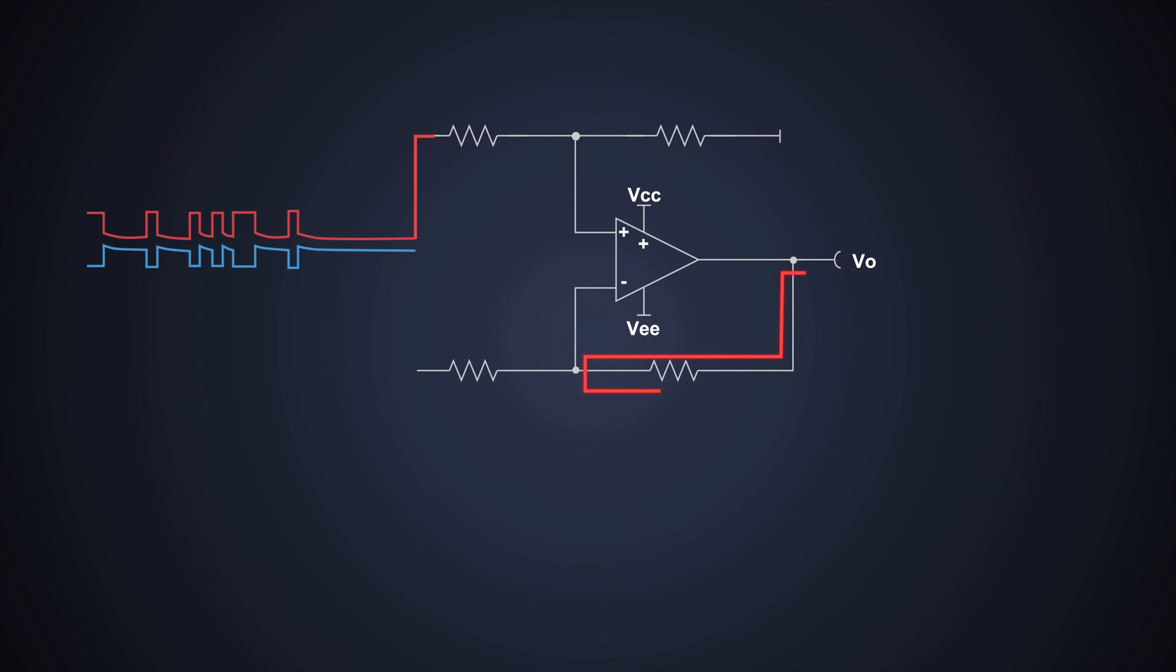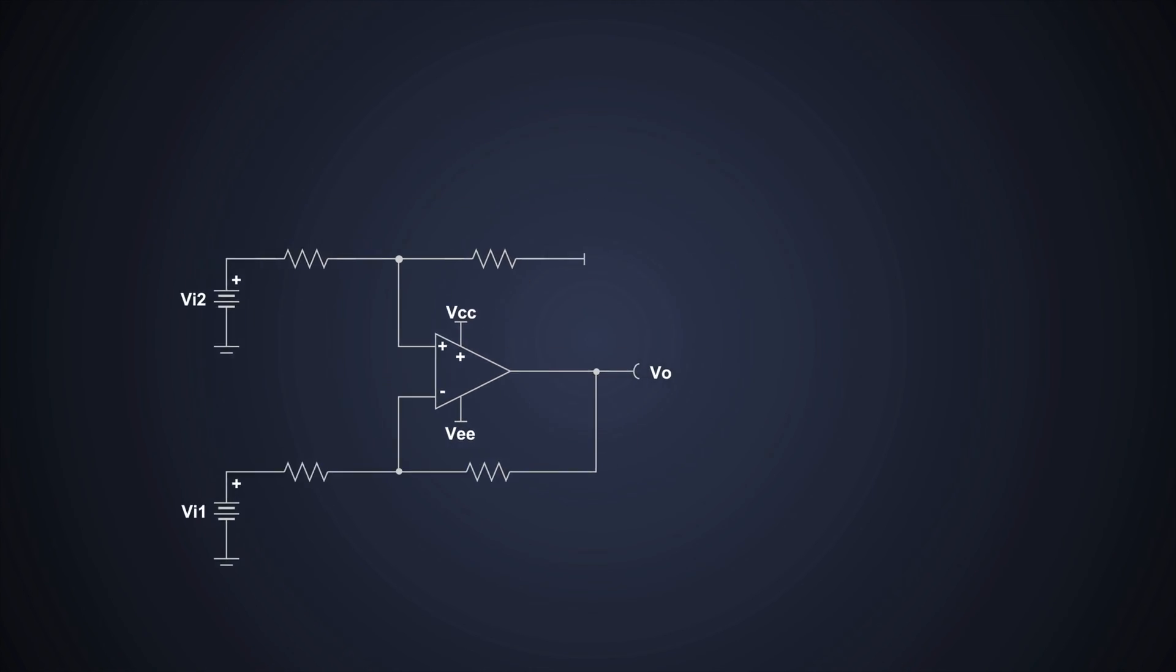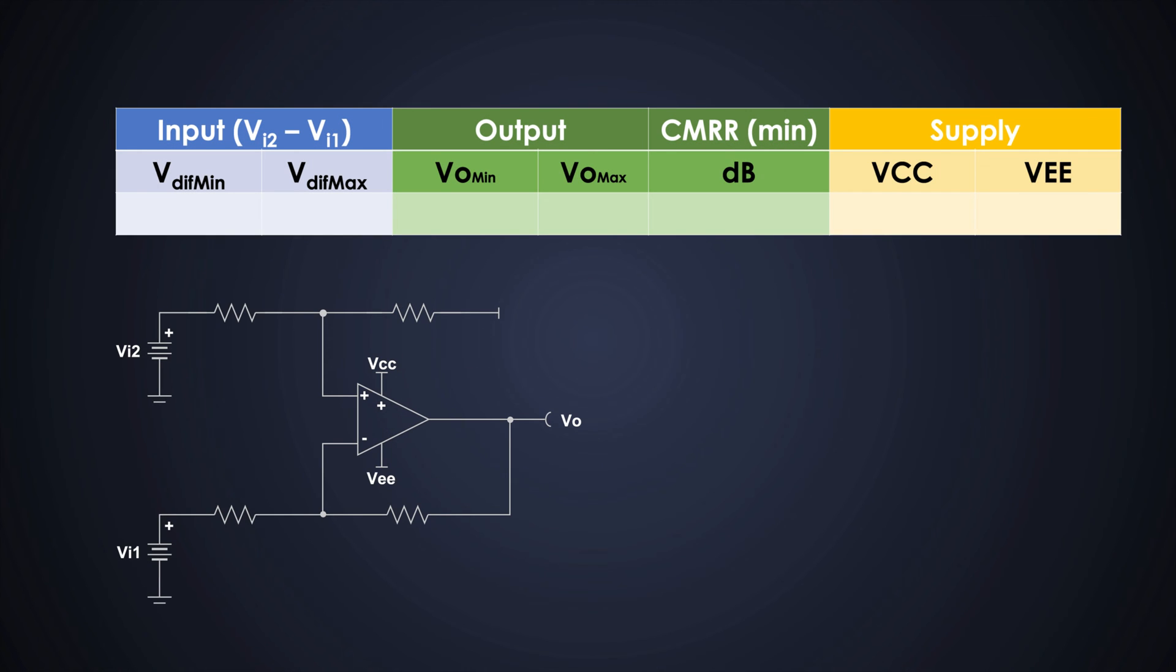This is the basic feedback taken from the output to the inverting terminal of the op-amp. The first signal is given to the inverting terminal and we provide another signal to the non-inverting terminal through a resistor divider network. And as usual, we need VCC and VEE supplies when we need some sort of negative output. Well, these are the requirements of the circuit.